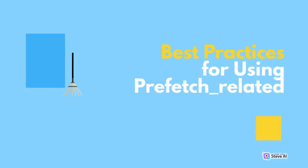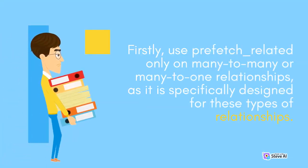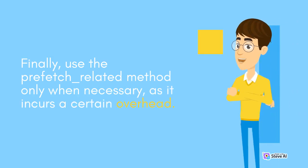To achieve the best results with prefetch_related, keep these best practices in mind. Firstly, use prefetch_related only on many-to-many or many-to-one relationships, as it is specifically designed for these types of relationships. Secondly, consider using prefetch_related in combination with select_related to optimize queries involving multiple levels of relationships. Finally, use the prefetch_related method only when necessary, as it incurs a certain overhead.